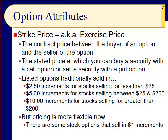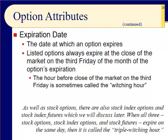Let's take a look at more option attributes, and the very important break-even point. Slide 17: the strike price, also called the exercise price. This is the contract price between the buyer and the seller of an option — the stated price at which you can buy the security if you're buying a call option, or sell the security if you're the buyer of a put option. Options used to be listed in $2.50, $5, and $10 increments, but now they're almost always listed in dollar increments due to technology.